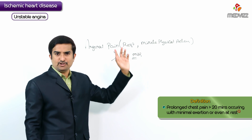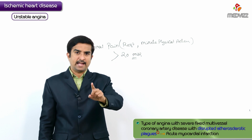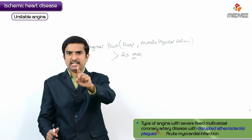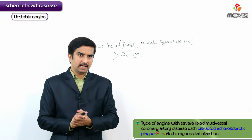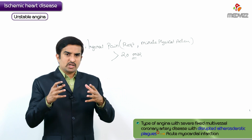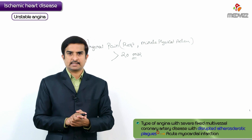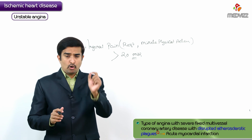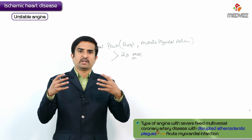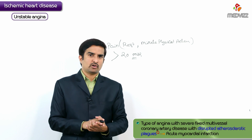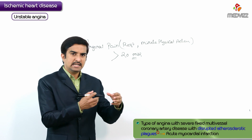Unstable angina is a type of angina with severe fixed multi-vessel coronary artery disease with a disrupted atherosclerotic plaque. It is not just atherosclerosis alone that is responsible — the most common cause is a disrupted atherosclerotic plaque, which may progress to the development of acute myocardial infarction.